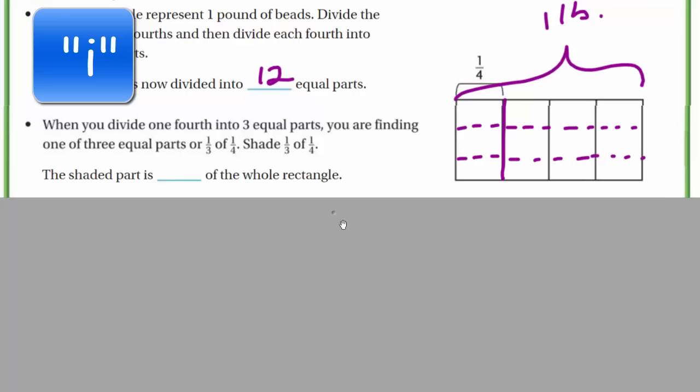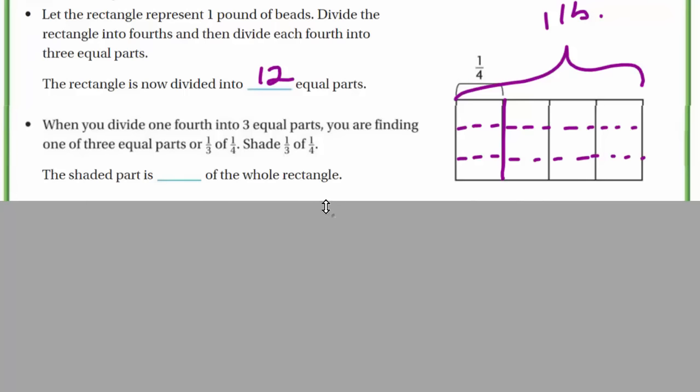You see how we did that? No trickery, my friends. When you divide one-fourth into three equal parts, you are finding one of three equal parts or one-third of one-fourth. Shade one-third of one-fourth. If we were going to divide, finding one-third of one-fourth, that would be this part right here. I guess that would be a shading.